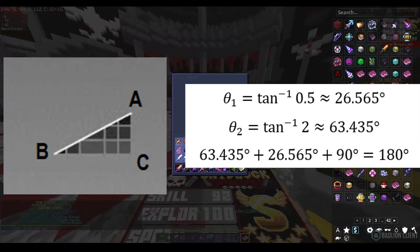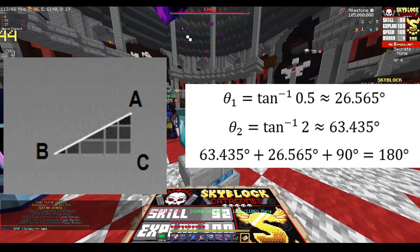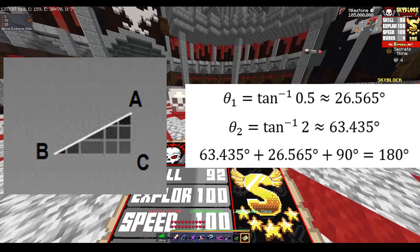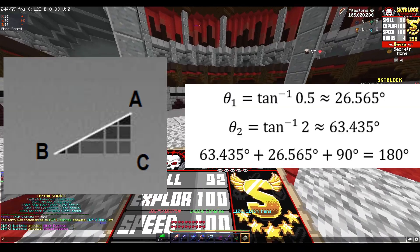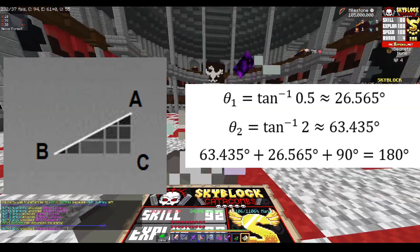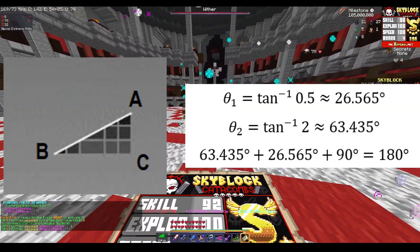Since these two angles plus the right angle add up to 180 degrees in total, these must be the angles of the slope. Therefore, the slope is not 22.5 degrees. It is 26.565 degrees.